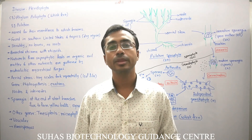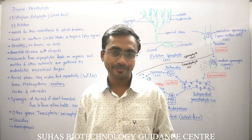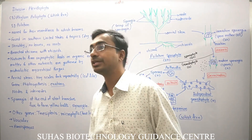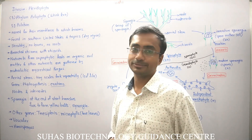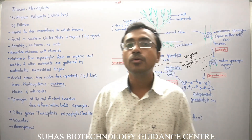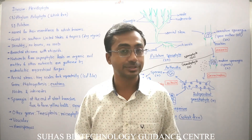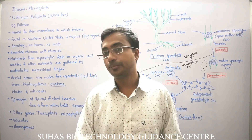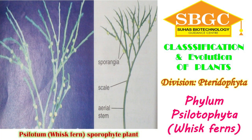Hello all. Let's move to another important phylum in division Pteridophyta. We have already discussed that division Pteridophyta means these are the vascular cryptogams — vascular means they have a well-developed vascular system, but they are also cryptogams, meaning they are non-flowering, seedless plants. The third important phylum is phylum Psilophyta, and it is also called whisk fern.